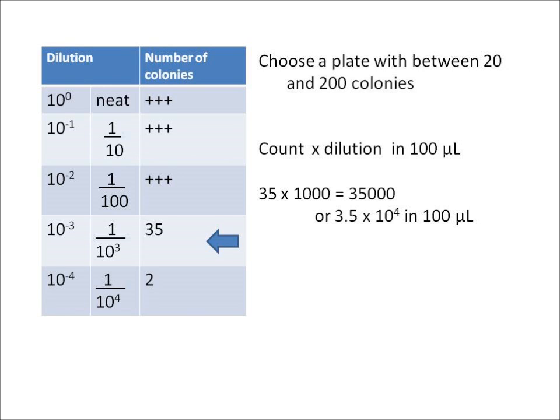But we want to know how many bacteria there were in one ml - that's how we normally express it. And because we've plated out 100 microliters, which is a tenth of a ml, we need to multiply by 10. So 3.5 times 10 to the 4 multiplied by 10 is 3.5 times 10 to the 5. So we have 3.5 times 10 to the 5 colonies from a 1 ml sample.